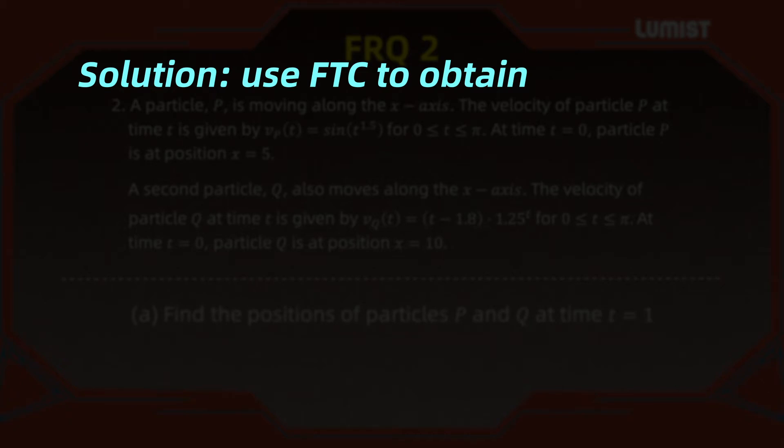We're going to call x_P the position of particle P. So we know that x_P(1) minus x_P(0) by the fundamental theorem of calculus is the integral from 0 to 1 of the derivative of this position x_P. But the derivative is just the velocity at time t. That means x_P, the particle's position at 1, equals x_P(0)—that is 5—plus the integral from 0 to 1 of the velocity, the sine of t to the 1.5 dt. We plug these numbers into the calculator and we obtain approximately 5.371.